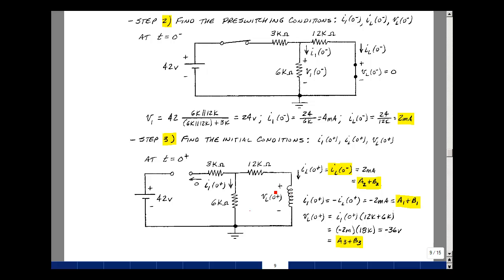Now the current that's flowing in here is going to have to flow this way since there's an open circuit here. There's no current going here. So the current I1 at zero plus is the same as minus I sub L of zero plus, 2 milliamps, so it's minus 2 milliamps. And that's equal to A1 plus B1 times E to the zero, so just A1 plus B1.